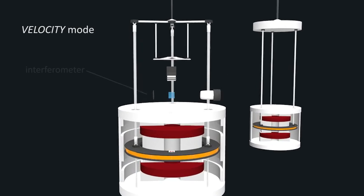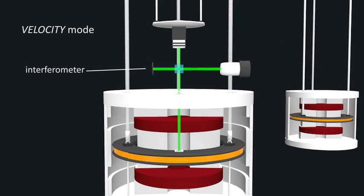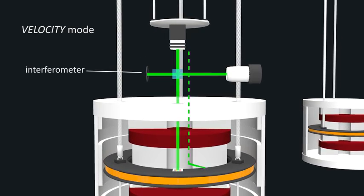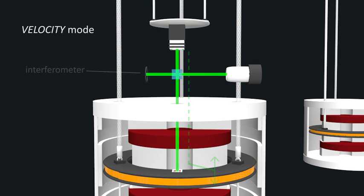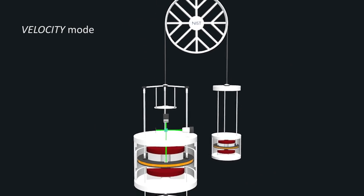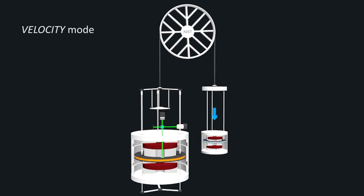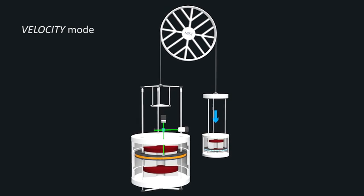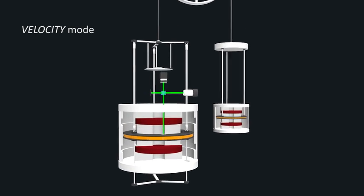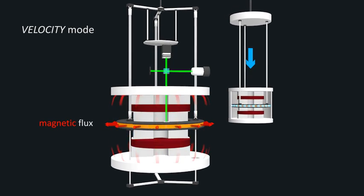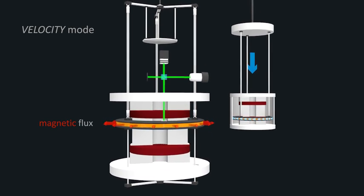In velocity mode, laser sensors track the coil's motion using a technique called interferometry. This detects differences in position as small as a fraction of the wavelength of the laser light. As the motor moves the coil, the interferometry system ensures that the coil's motion remains perfectly constant. That constant velocity makes it possible to calculate the strength of the magnetic field.